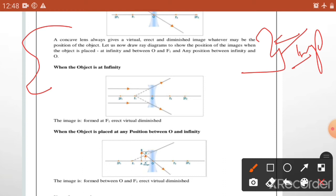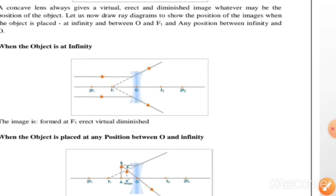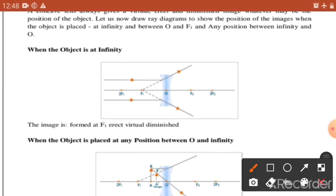अब हम देखते हैं कि किस तरीके से ray diagram बनाते हैं. जो points convex lens के time पर हम लोगों ने लिए थे, वही points हम यहाँ पर भी लेंगे: optical center को O से, then F1, F2, 2F1 और 2F2. यही सभी points हम लोगों ने convex lens के image creation के time पर study किये थे. Let me start this topic - first part है आपके पास में.